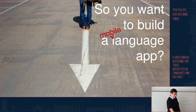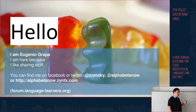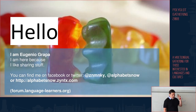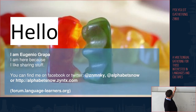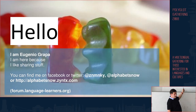I'm going to talk a little bit about app building in the language space. My name is Eugenio Grappa. I'm here because I like to share stuff, and you can find me if you have questions about the presentation, the content, or app building — not giraffes — on ZenMonkey, or at AlphabetsNow on Twitter, or on a blog called AlphabetsNow at syntax.com. I'm also a member of the forum at languagelearners.org.